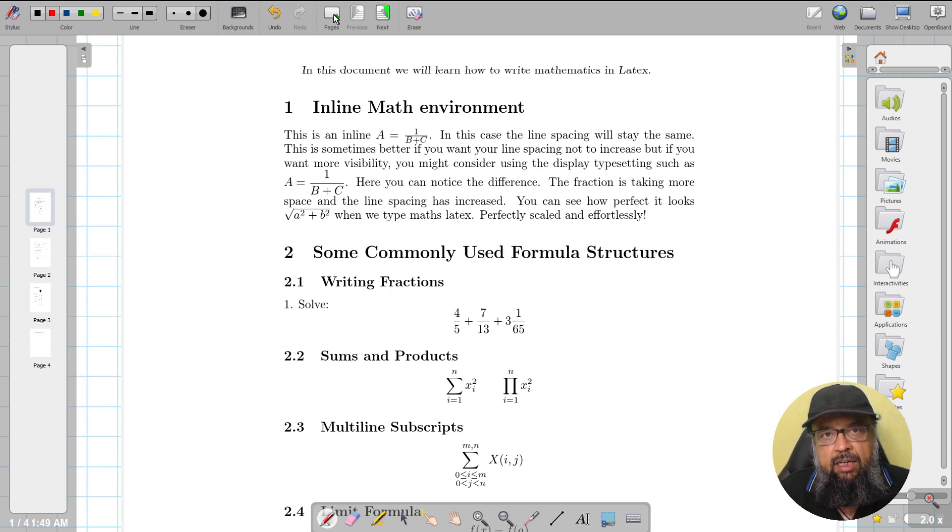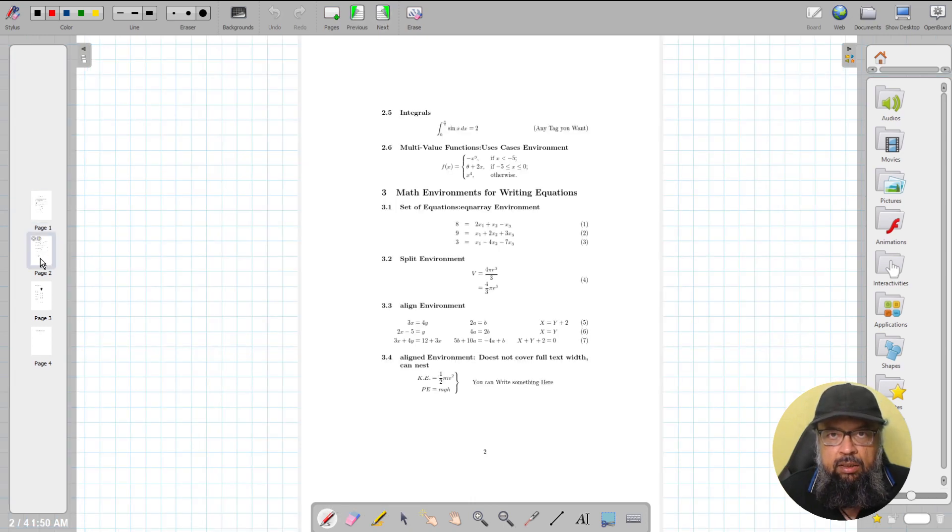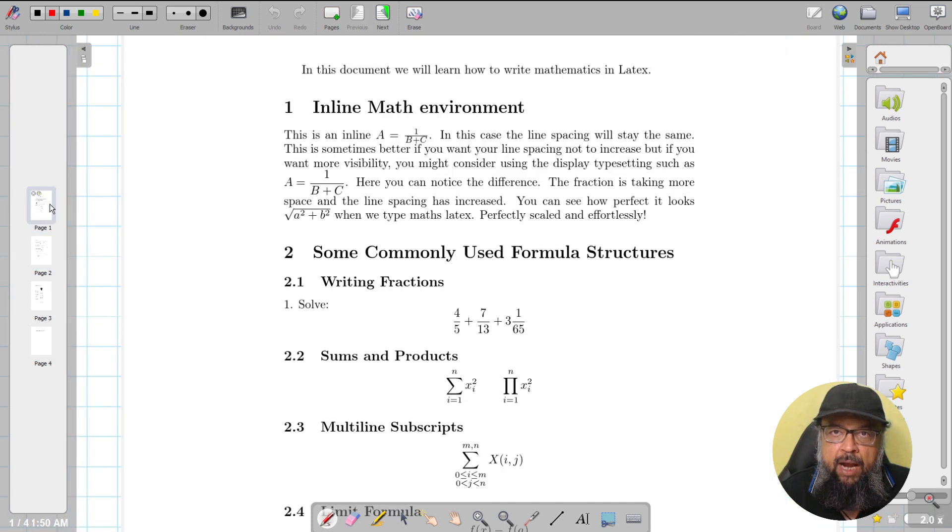But these features are self-explanatory. You can go to the next page. On the left-hand side, you see that we have moved to the next page. You can go to the previous; it will move back to the previous. You can erase annotations, and there are some other options which you can easily understand by practicing.